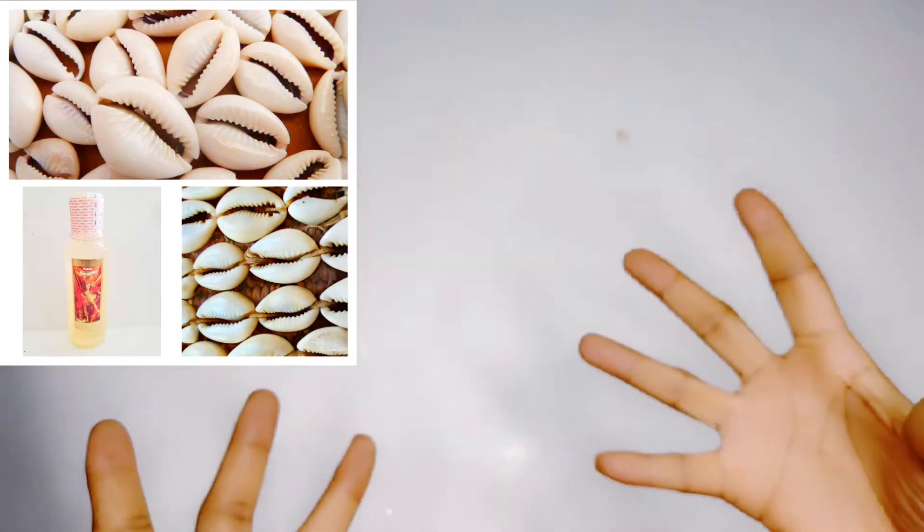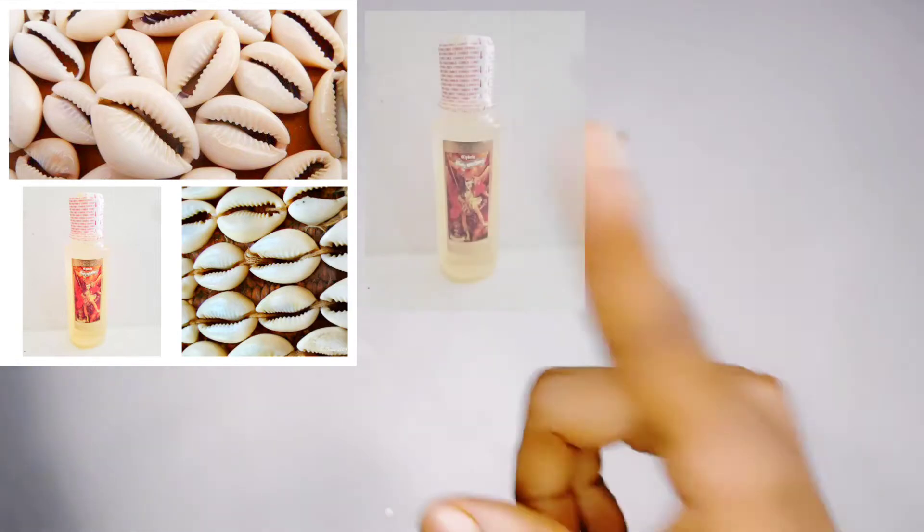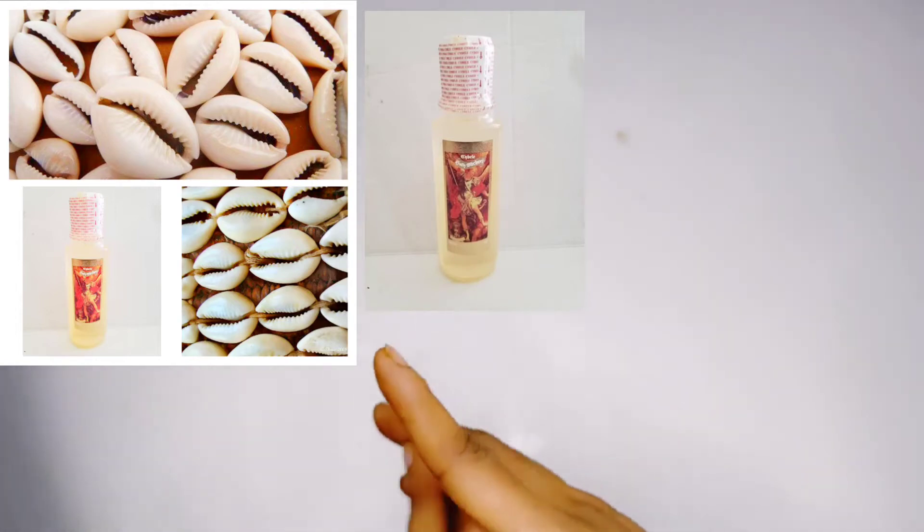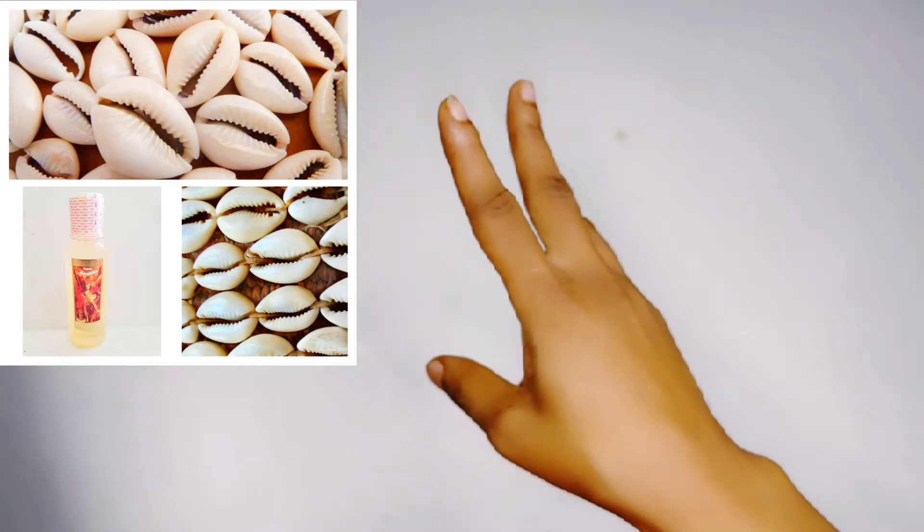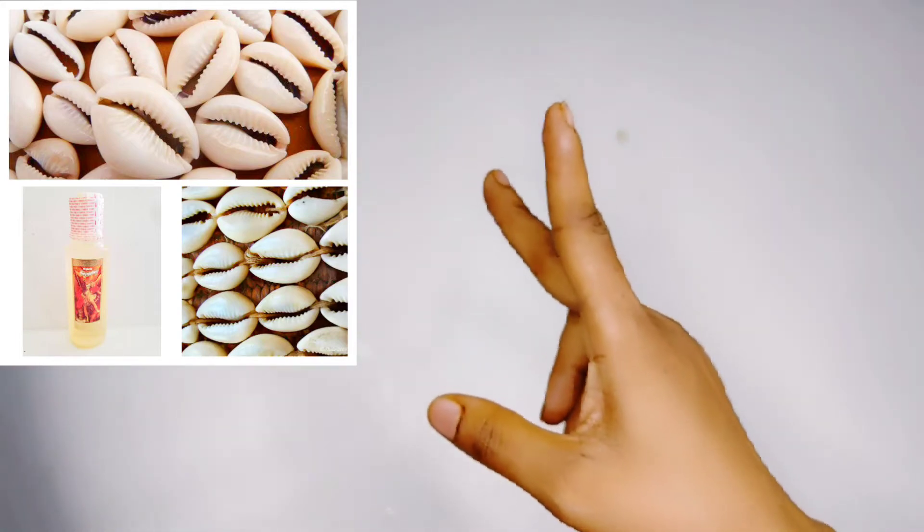So when you get this cowrie, you go ahead and get a Saint Michael perfume as well. When you get the Saint Michael perfume, you locate any river around you, any river at all you can access. You go ahead and take these two items, the cowries and the Saint Michael perfume, to the riverside.